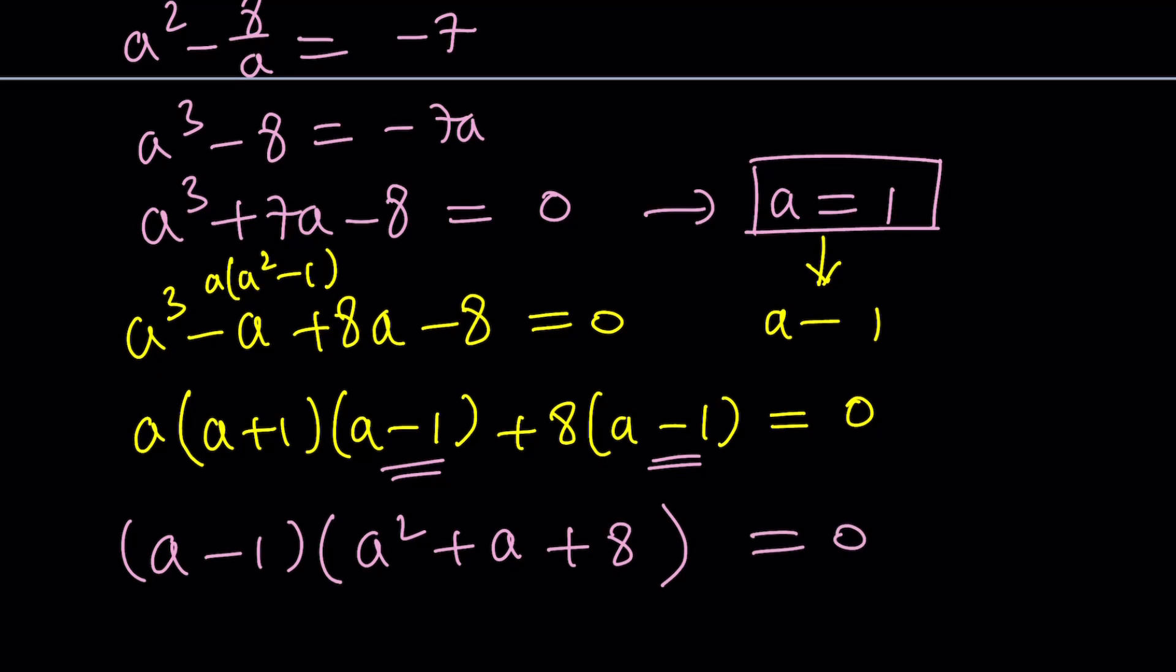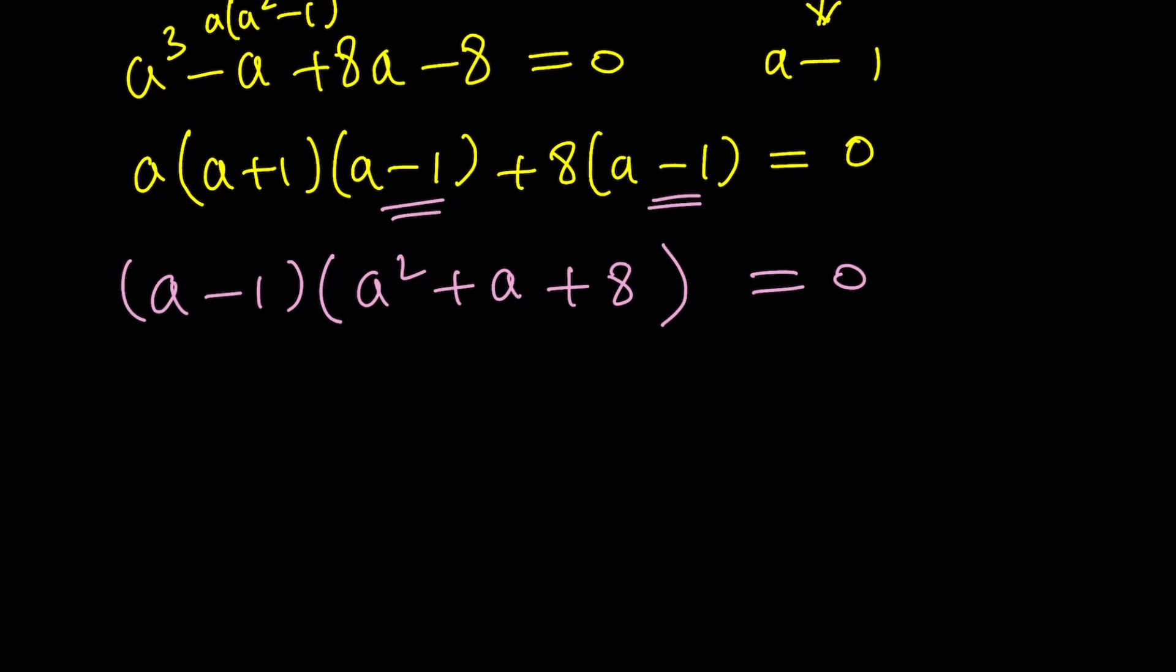Great. Now, a equals 1 is a solution, we knew that. But what about the other solutions? The other solutions are going to be coming from the quadratic. And if you solve the quadratic by using the formula or otherwise, you're going to get negative b plus minus the square root of b squared 1 minus 4ac, which is actually going to give you a square root of 31i. So in other words, the other solutions are not going to be real. And guess what? We want them to be real. So we don't need them. We only need a equals 1.